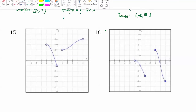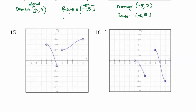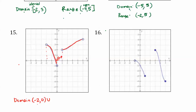Graph 15 has two separate pieces that are not connected with each other. For the domain, handle each piece separately. The left piece starts at x equals negative 2 and ends at x equals 0, with both endpoints open, so we use parentheses around negative 2 and 0. There is a gap on the x-axis from 0 to 1 with nothing graphed, so when there's a gap in the domain we use a union. The next interval starts at x equals 1 and stops at x equals 5, with both endpoints open, so we put parentheses around those.